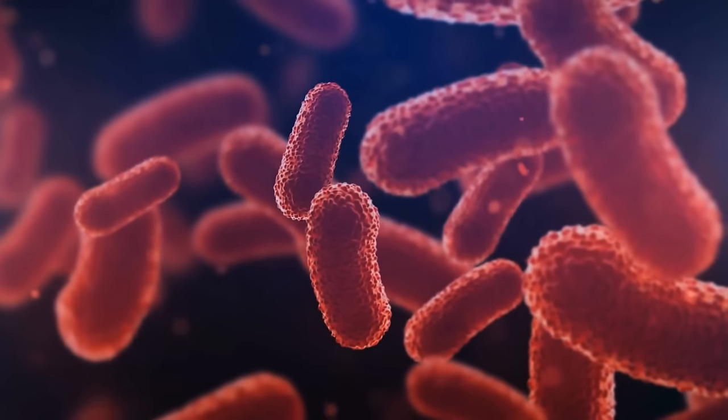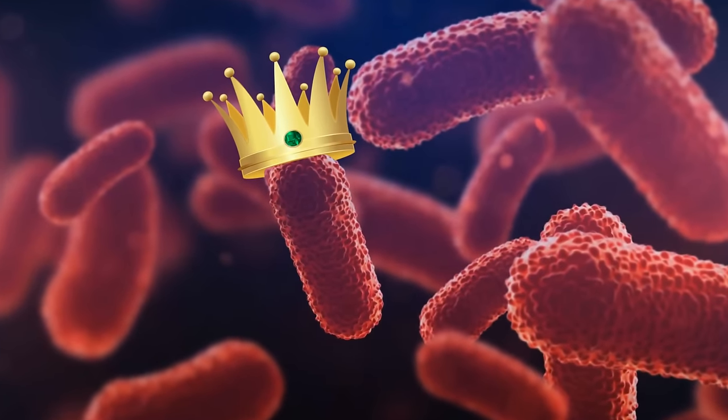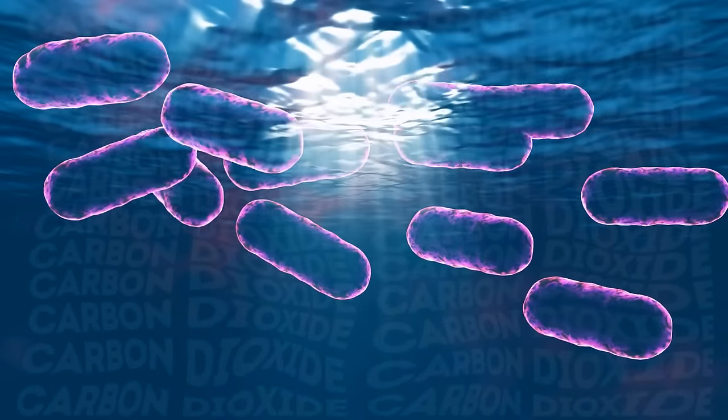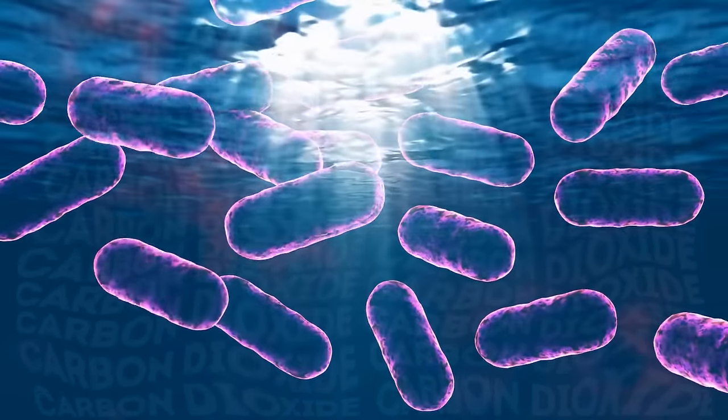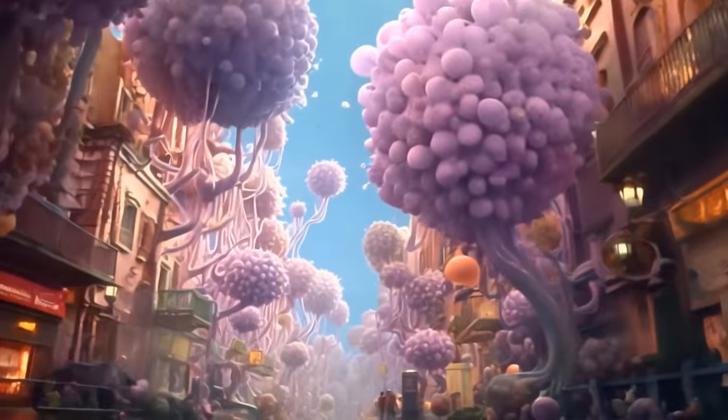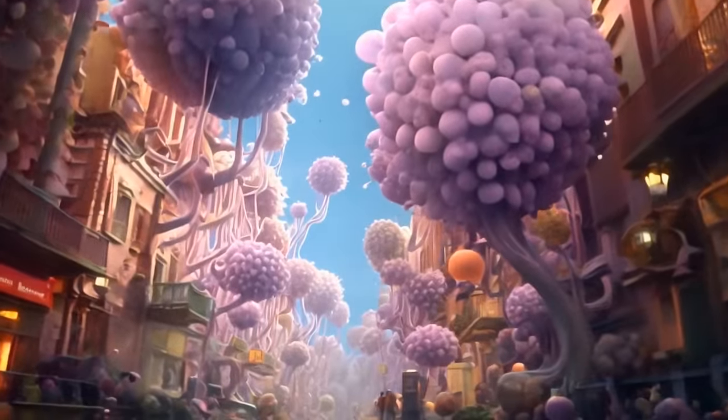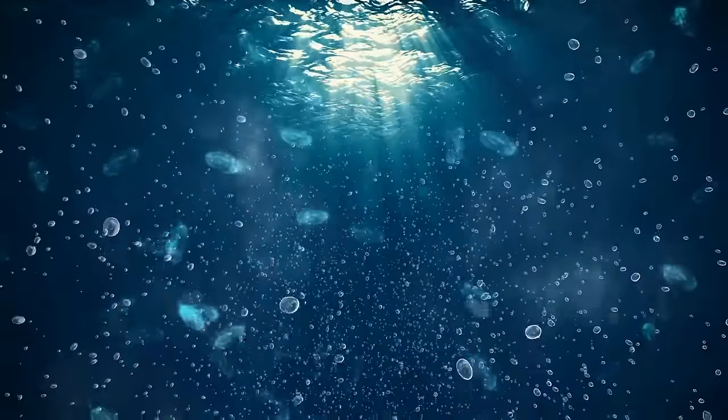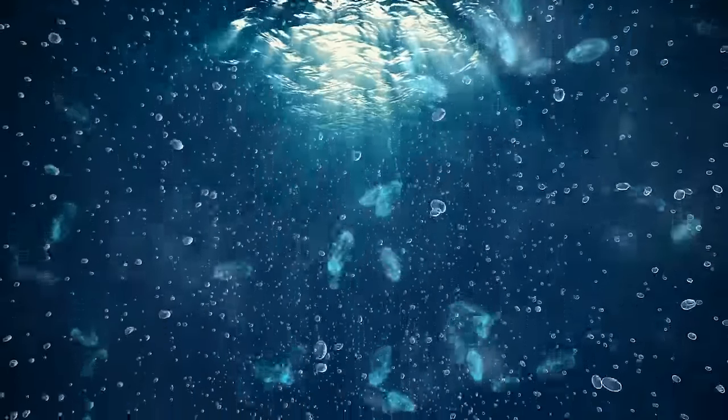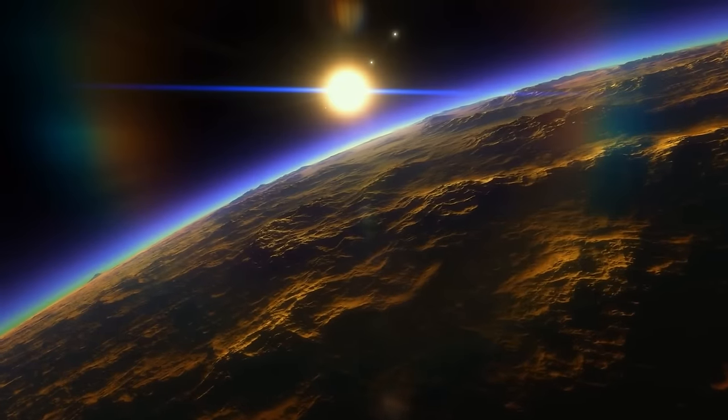Simple organisms, like algae and bacteria, rule the scene. They thrive in the oceans, using the abundant carbon dioxide to grow and multiply. The waters are teeming with activity, with colorful, microscopic life forms buzzing around like a busy city. These tiny organisms are working hard, releasing oxygen as they go about their business. They're like little factories, slowly changing the composition of the atmosphere.